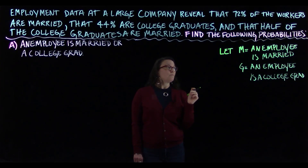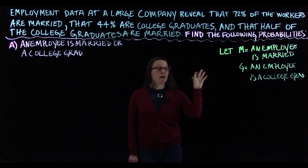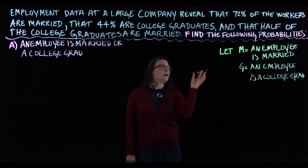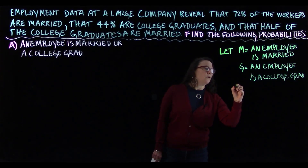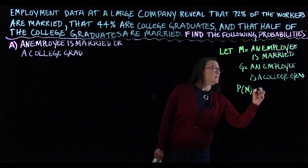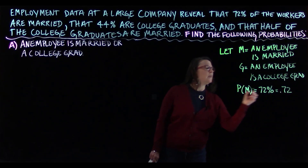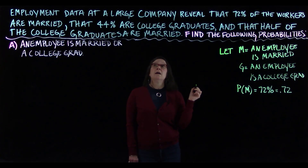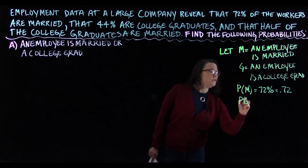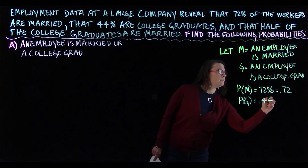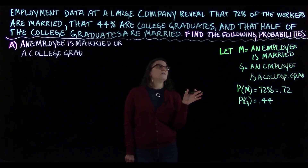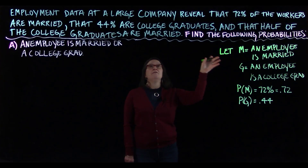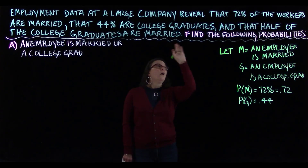I'm defining the event, not the probability. So looking at what's given: 72% are married, meaning the probability that someone is married is 0.72. The probability that an employee is a college graduate, P(G), is 0.44. And half of the college graduates are married, so the probability that someone is both married and a college graduate is 0.22.